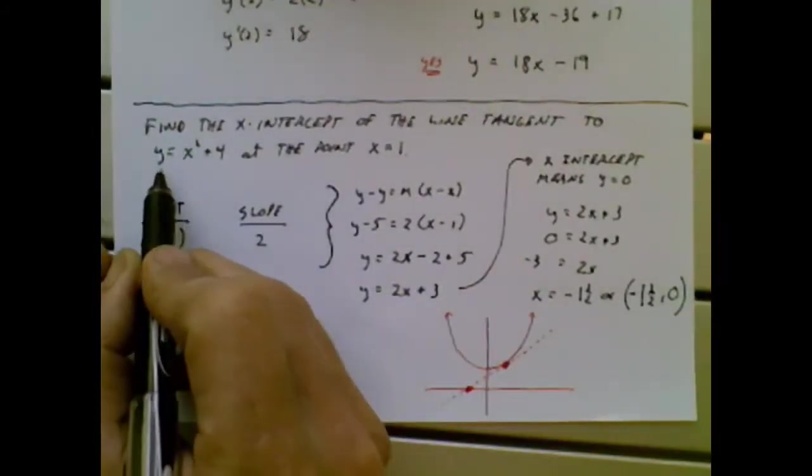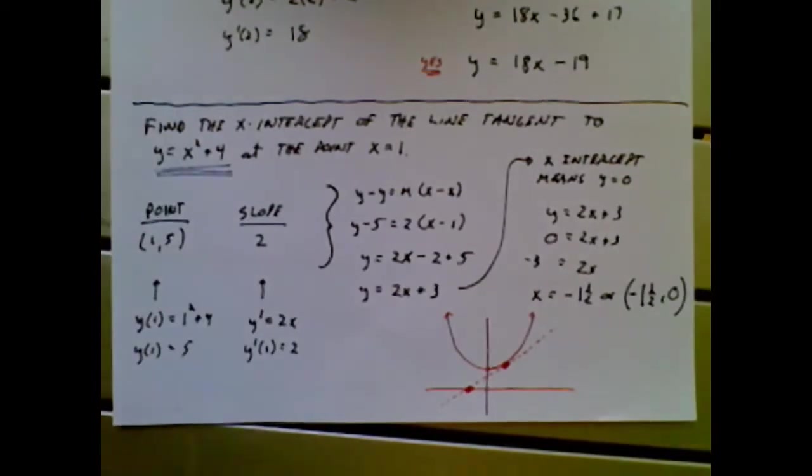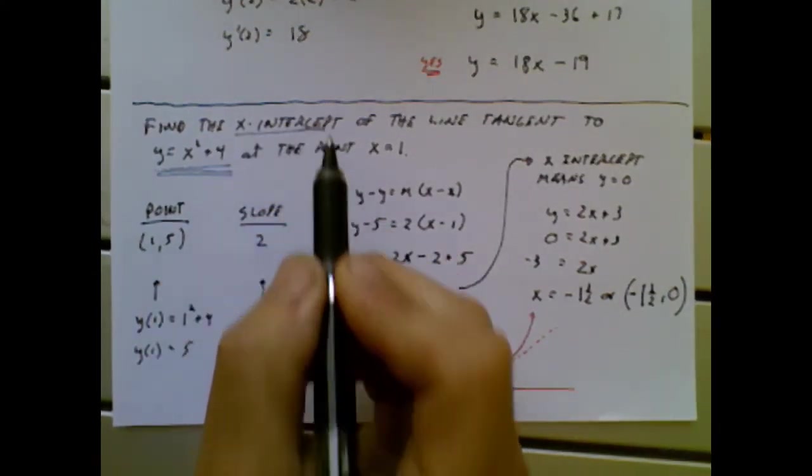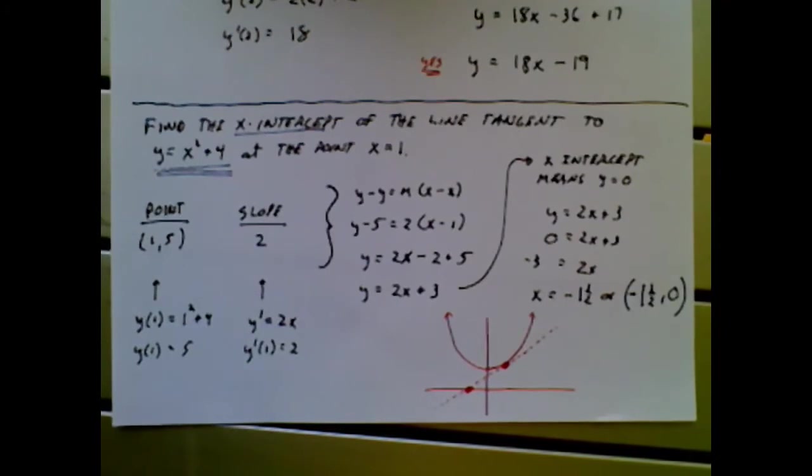I have a much easier equation now: y equals x squared plus 4. We know that's a parabola opening upwards, y intercept of 4. We want the tangent line at x equals 1. But we're adding an extra step. We want to find the x intercept of that tangent line. So it's just an additional algebra step.